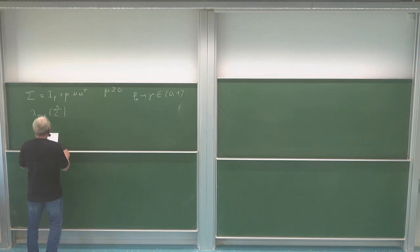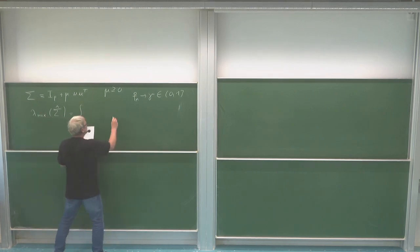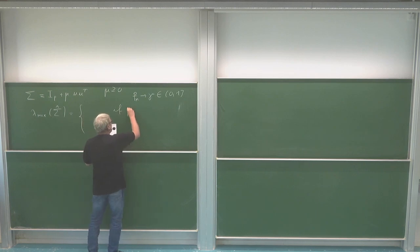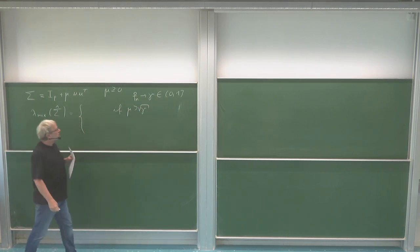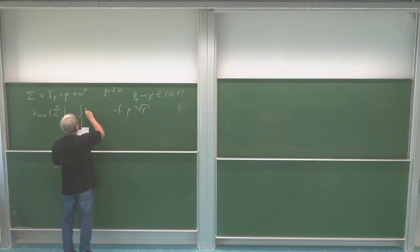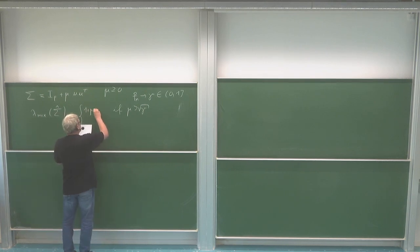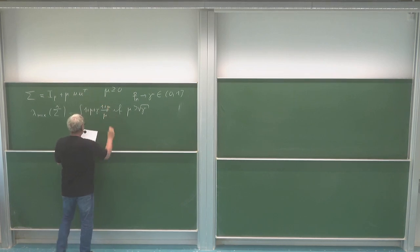The maximal eigenvalue of this matrix can be seen if μ is big enough. How big does it have to be? It has to be bigger than the square root of γ. And then we can say what it is: it is 1 plus μ plus γ times (1 plus μ) divided by μ.